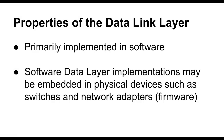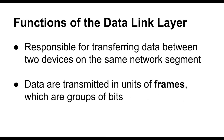The data link layer has two important functions. It's responsible for transferring data between two devices on the same network segment. So if you have two devices that are directly connected on the same network segment, the data link layer will get data between those two devices. It does this by splitting the data into units known as frames — groups of bits that comprise one unit of data along with some header information and some error checking.